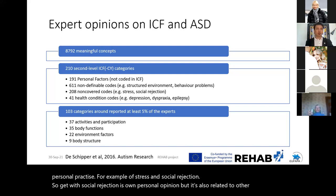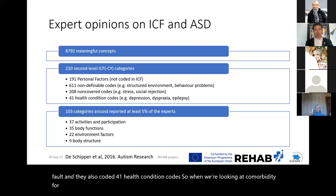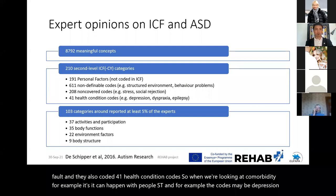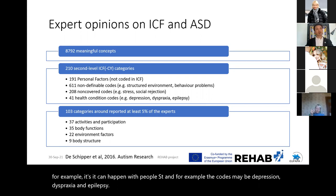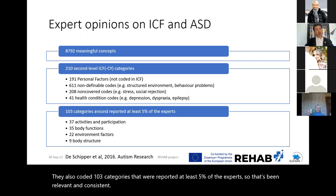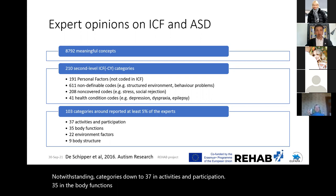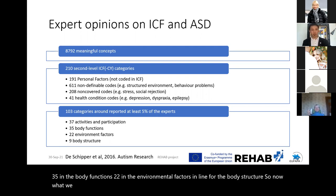They coded 103 categories reported by at least 5% of experts as relevant and consistent. These were categorised into 37 in activities and participation, 35 in body functions, 22 in environmental factors, and 9 in body structure. So now we see a lot more environmental factors compared to what the literature review found.